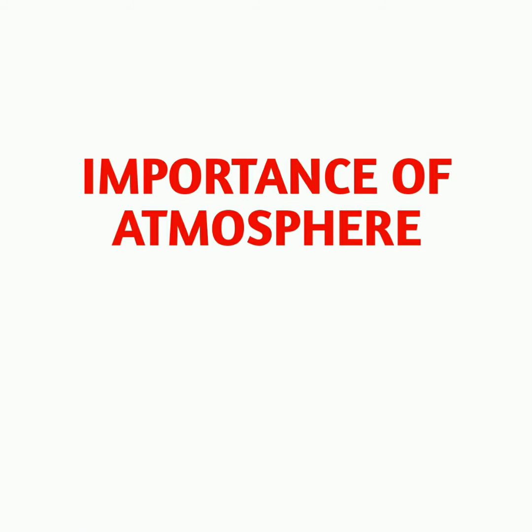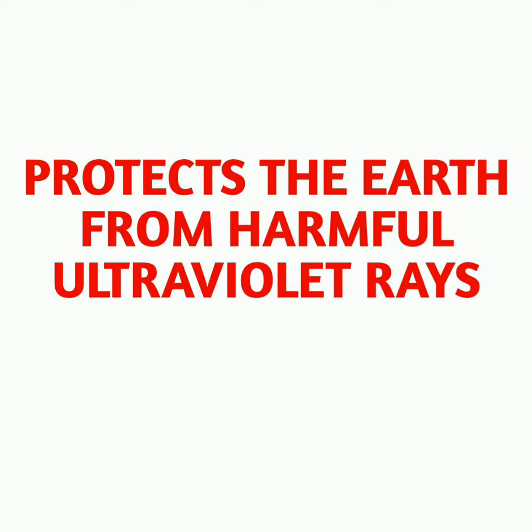Now let's see how the atmosphere helps us. The atmosphere helps us in many ways. It protects the earth from becoming too hot by preventing a large part of sunlight from reaching the earth. It also protects us from harmful ultraviolet rays of the sun, which are harmful to us.